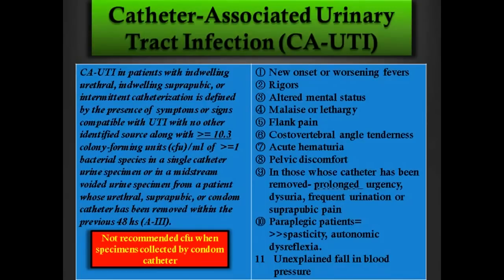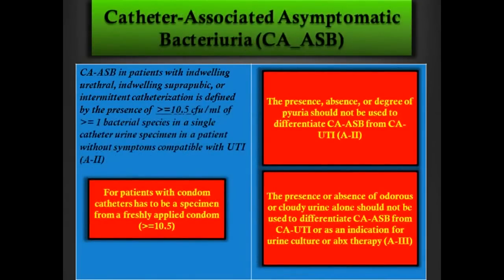When can a bedridden patient with dementia have catheter-associated UTI? Symptoms include new onset or worsening fever of unknown source, rigors, chills, altered mental status, malaise, lethargy, flank pain, acute hematuria, and pelvic discomfort. In patients whose catheter has been removed: prolonged urgency, burning, frequent urination, suprapubic pain. Paraplegic patients may show increased spasticity as the only sign — a patient at UofL admitted two to three times a month with more spasticity, tachycardia, and sometimes positive blood cultures who may reflect infection through spasticity alone. Fall in blood pressure can indicate the patient is becoming septic.